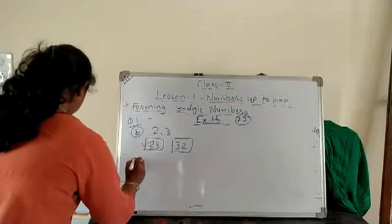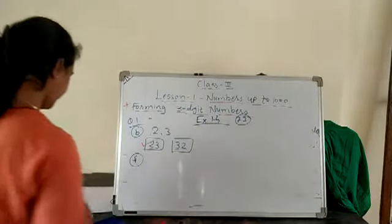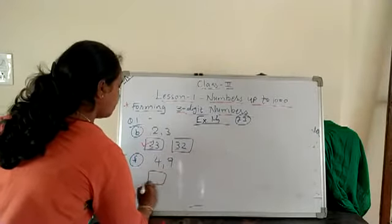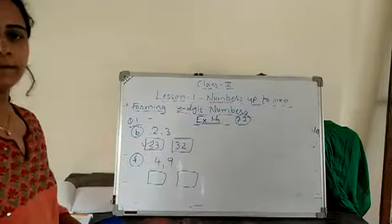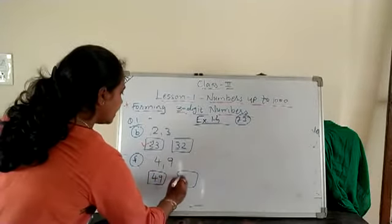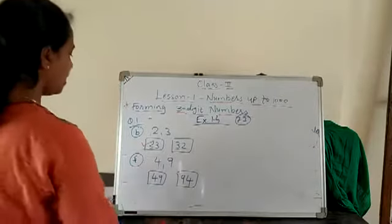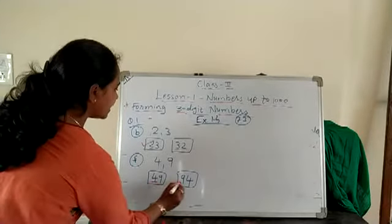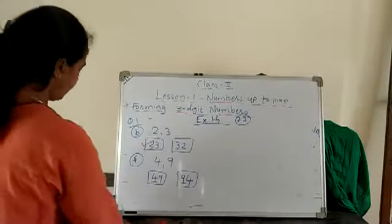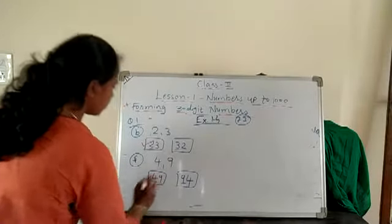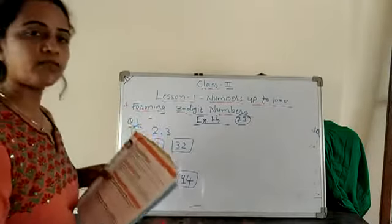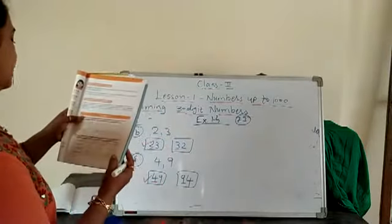Now take F: digits 4 and 9. Make 2 numbers: first is 49, and next is 94. Now again, see the 10s place — which is the smallest: 4 or 9? Obviously 4. So tick the smallest number. Now understood question 1? Complete it.